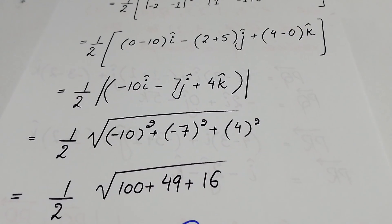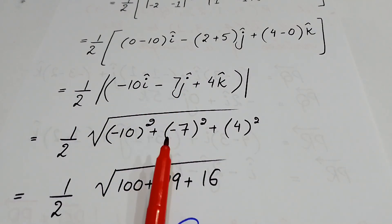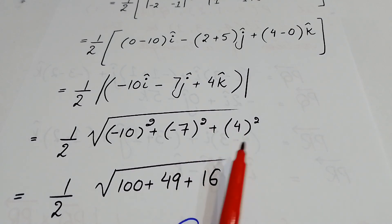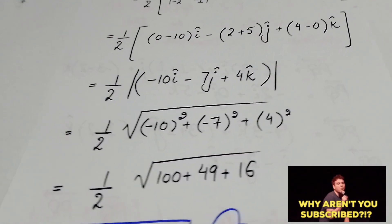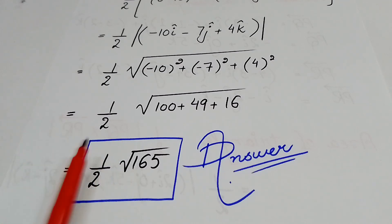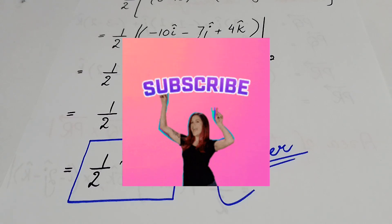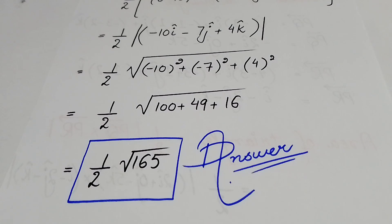Now I have to take the magnitude of the cross product. The method is to take the square root of the sum of squares of i, j, and k components: square root of (100 + 49 + 16). Summing up gives 165, so the magnitude is √165. The final answer is 1/2 times √165. This is my final answer. Hopefully you liked this video — please subscribe and don't forget. I hope to upload the next supplementary problems video soon. Until then, Allah Hafiz.